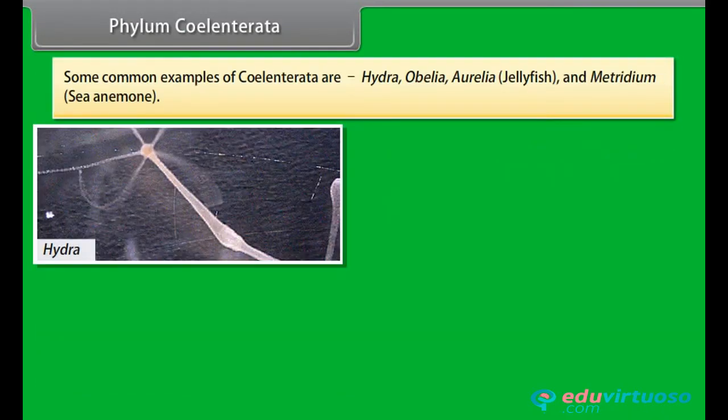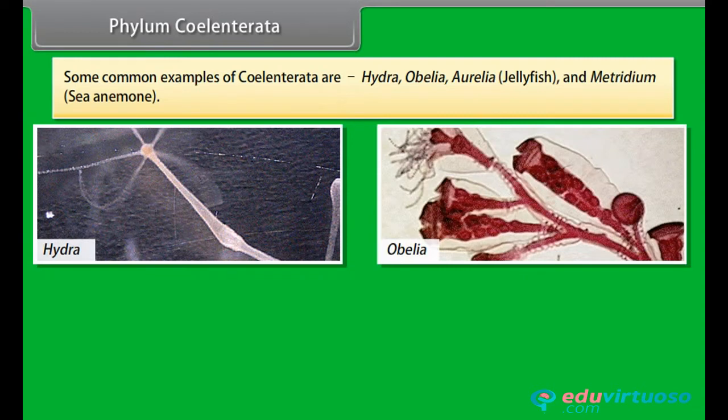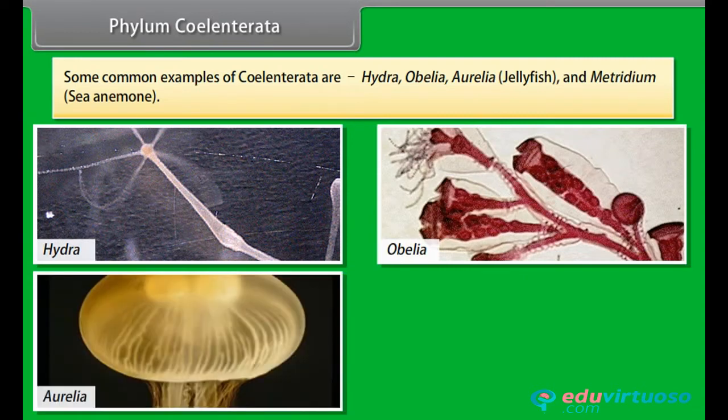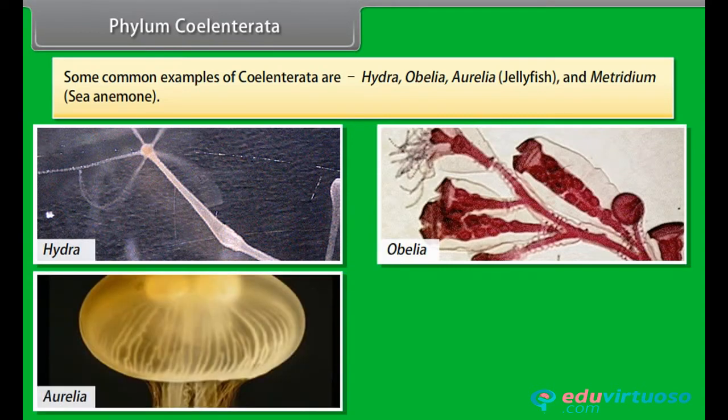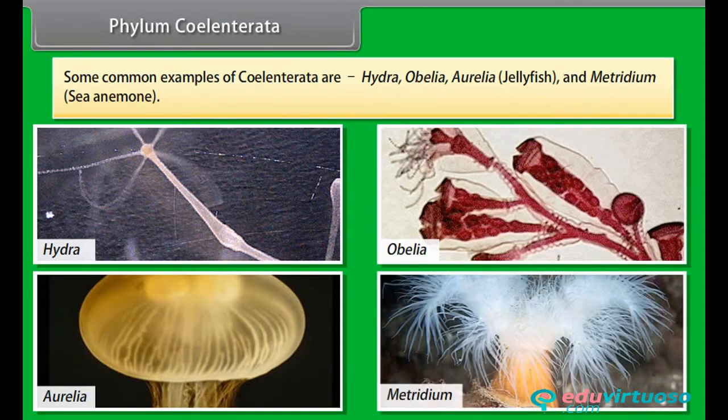Some common examples of Coelentrata are Hydra, Obelia, Aurelia, jellyfish, and Metridium, sea anemone. Phylum Platyhelminthus.